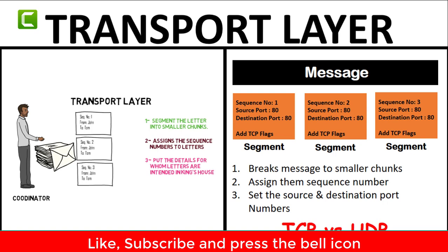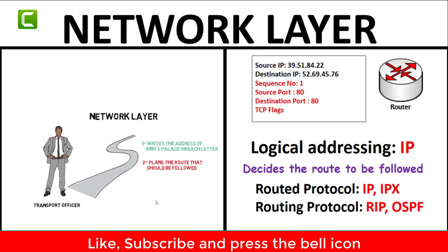The transport layer also decides the type of delivery — connectionless or connection-oriented. In the next step, the transport officer added the address of the French palace and decided the route; he is a decision maker, not responsible for physical delivery. Similarly, in the network layer of the OSI model, the IP address of the destination computer is attached to the segment and the route is decided. There are two kinds of protocols: routing protocols, which are algorithms finding the shortest path, and routed protocols such as IP, used to send data. The device used here is a router.